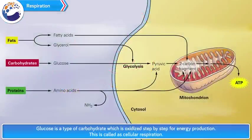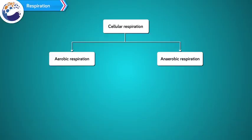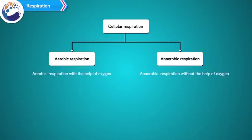Glucose is a type of carbohydrate which is oxidized step by step for energy production. This is called cellular respiration. Cellular respiration occurs amongst living organisms by two methods: aerobic respiration with the help of oxygen, and anaerobic respiration without the help of oxygen.